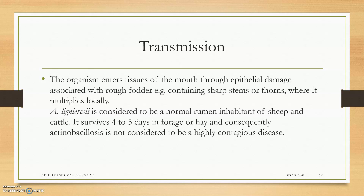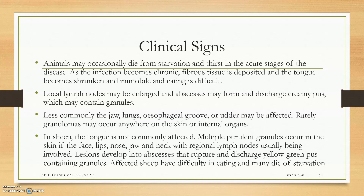The transmission: the organism enters the tissue of the mouth through epithelial damage. Whenever there is a small epithelial damage in the tongue or mouth region — associated with rough fodder containing sharp items or thorns — the bacteria enters. They are the normal rumen inhabitants of sheep, but whenever there is large hemorrhage or large mouth damage, they act as pathogens.